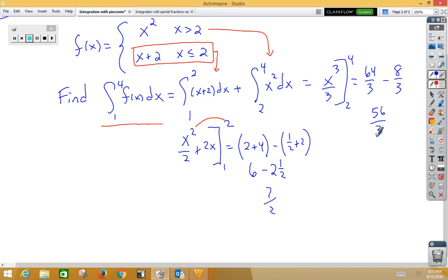Now I need to add these two. I've got 7 halves plus 56 thirds, which would be 21 over 6, plus 112 over 6, which is 133 over 6.